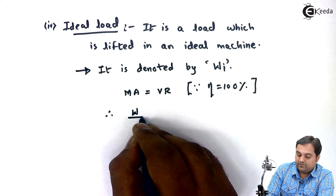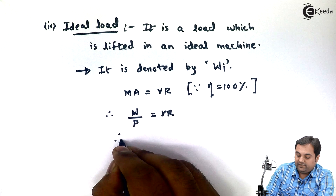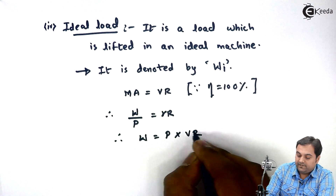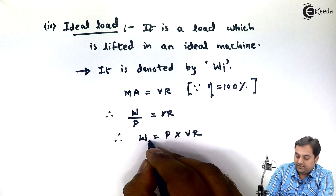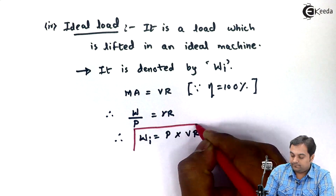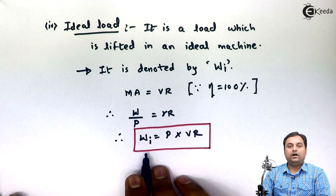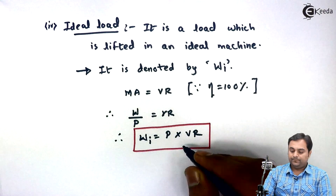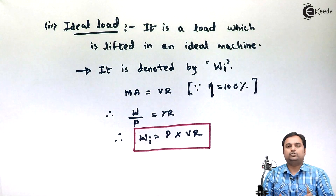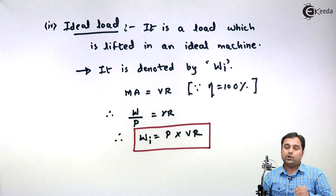Since mechanical advantage equals load upon effort, and this equals VR, we get W equals P multiplied by VR. Writing suffix i for ideal load, the formula for ideal load is Wi equals P into VR. This is the load we can lift in an ideal machine when there is no friction.